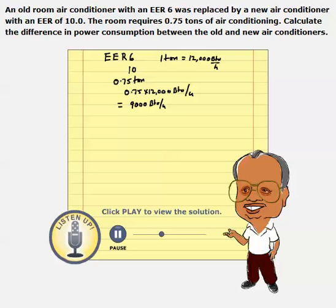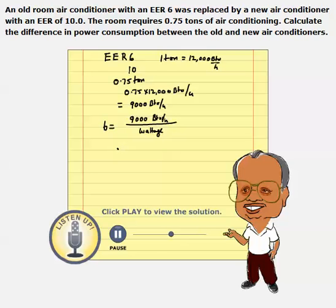So to pull out 9,000 BTUs per hour with an air conditioner of EER equal to 6, we are pulling out 9,000 BTUs per hour. The wattage is equal to 9,000 divided by 6. That happens to be 1,500 watts.